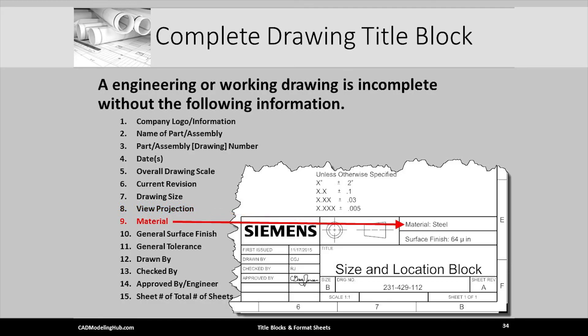Here I've added a cell to the default Siemens title block to hold the material call out. Another cell was added to hold the surface finish call out.